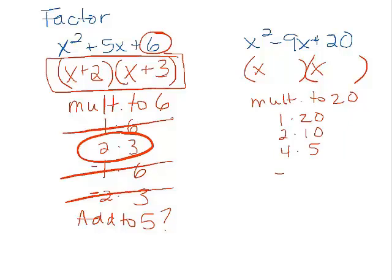1 times 20. 2 times 10. 4 times 5. Also, negative 1 times negative 20, negative 2 times negative 10, and negative 4 times negative 5. So we're multiplying to 20. But we want to add to negative 9. Notice that negative with a 9 up there.